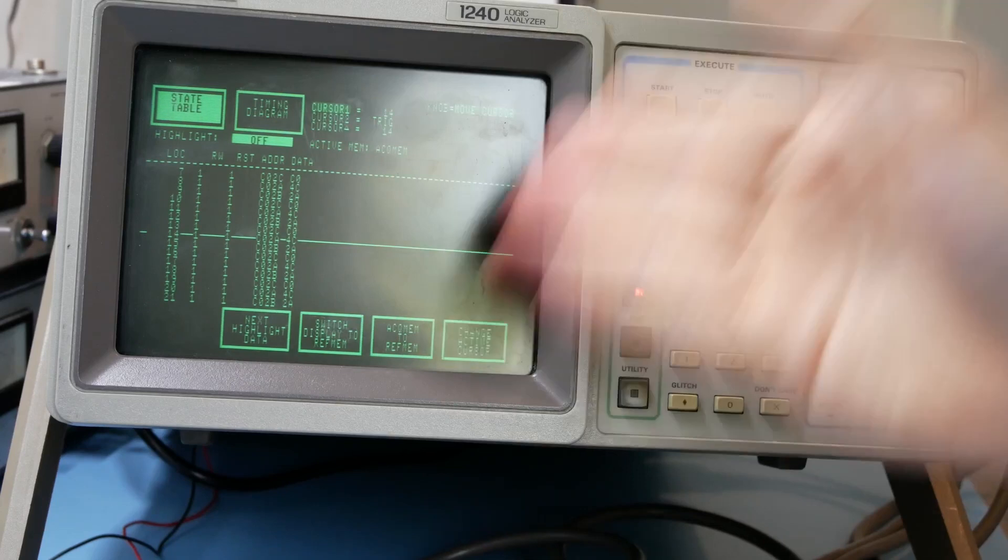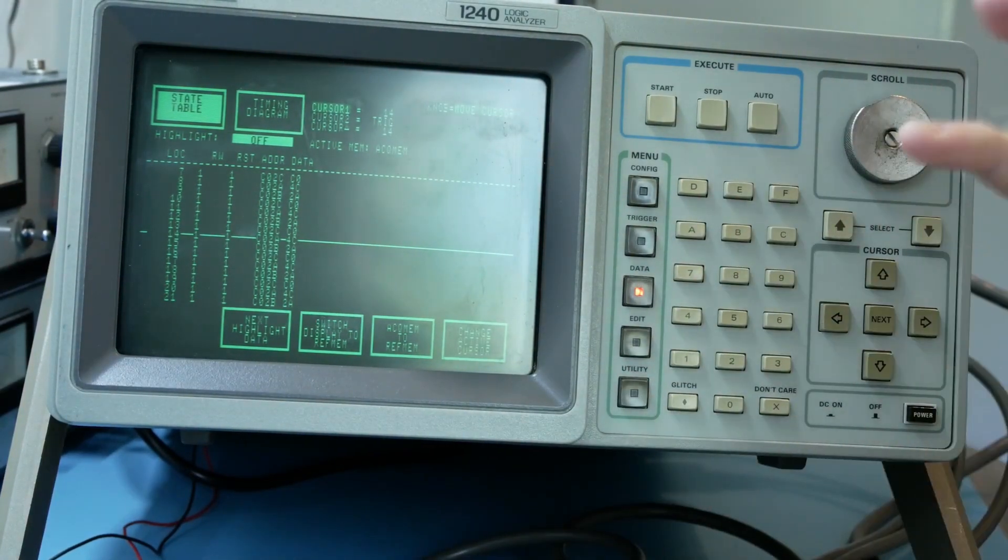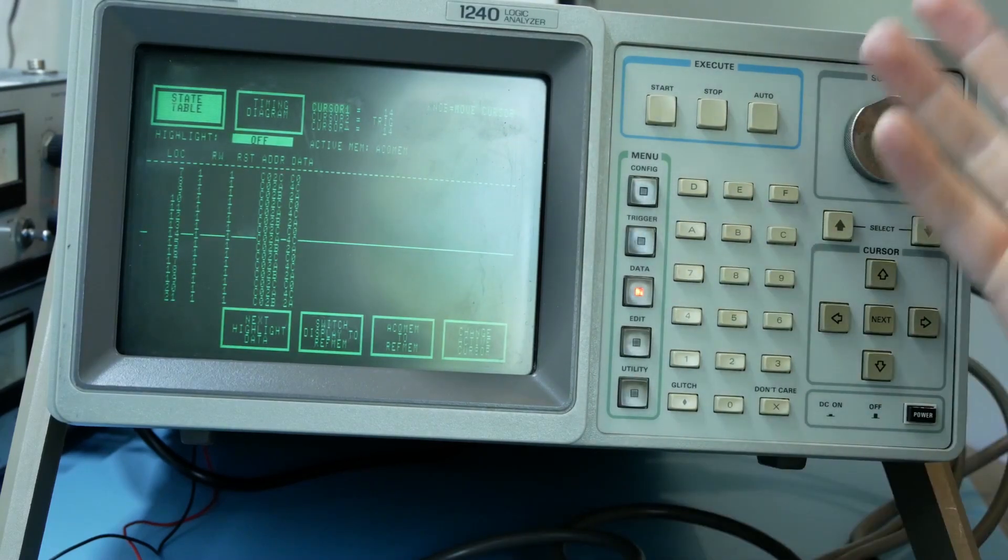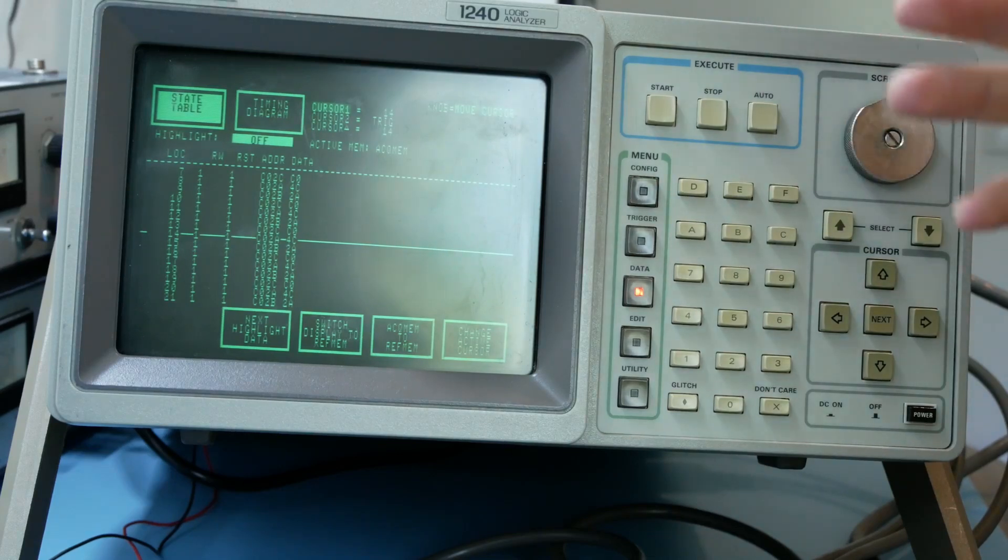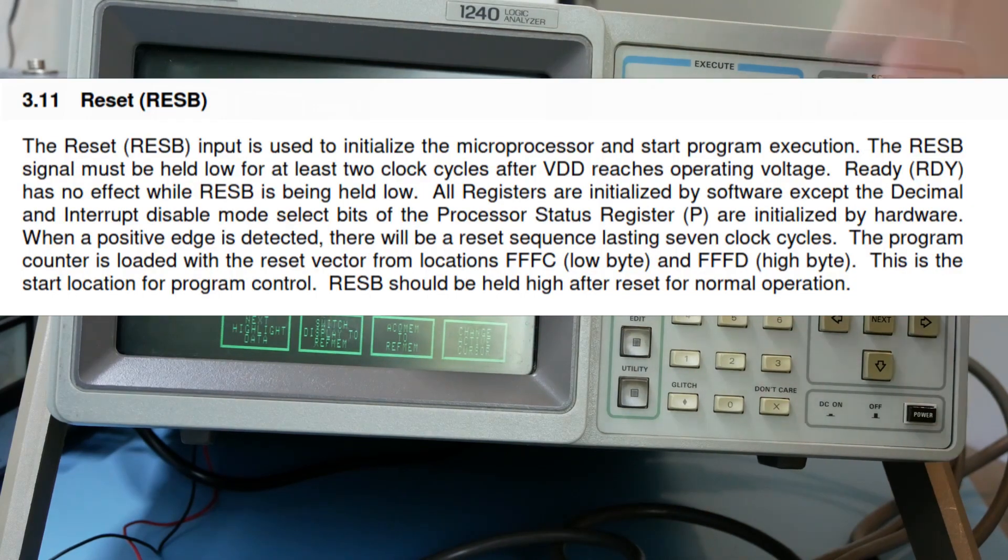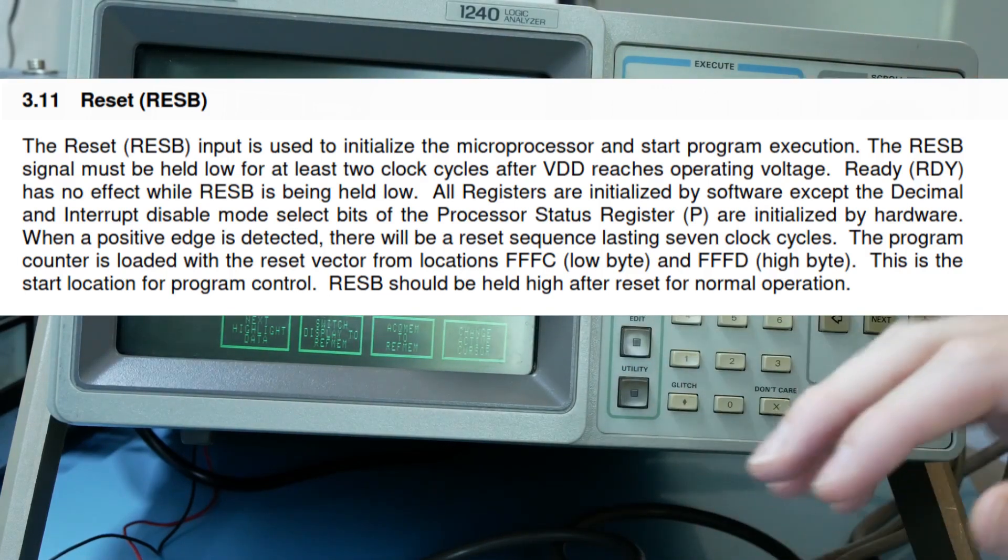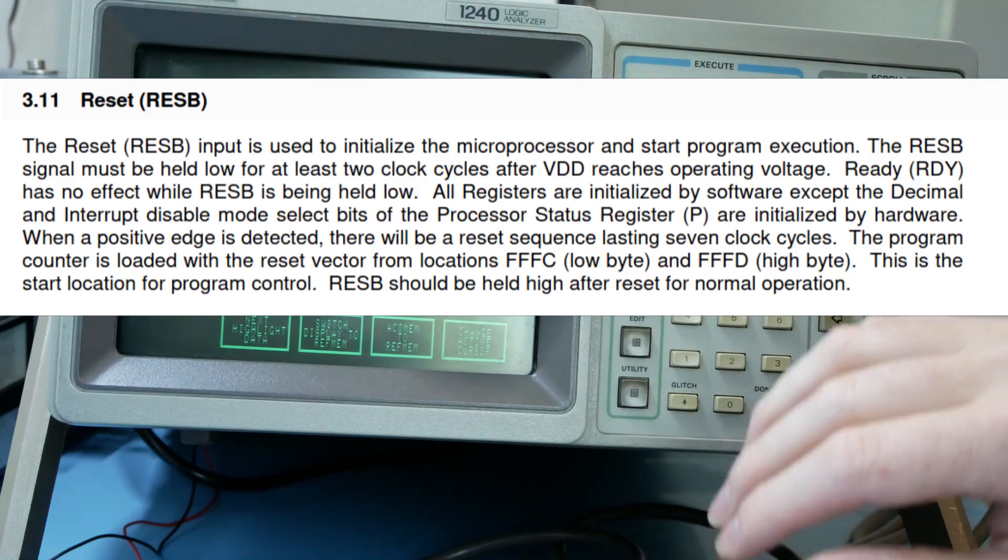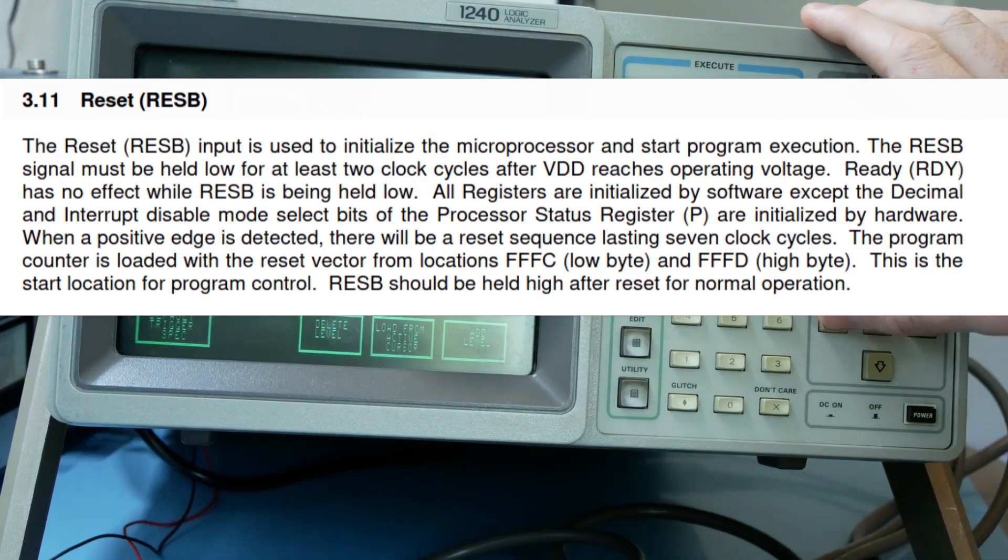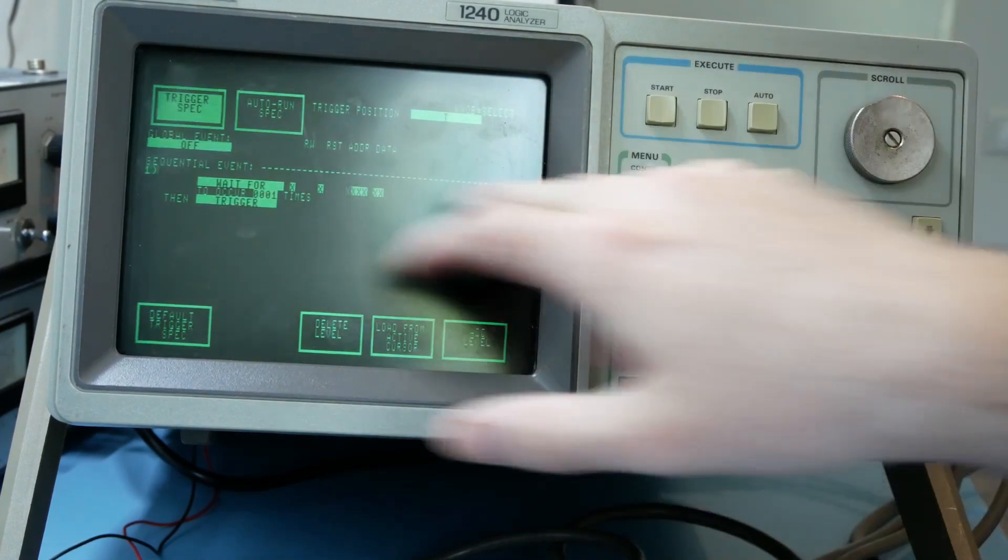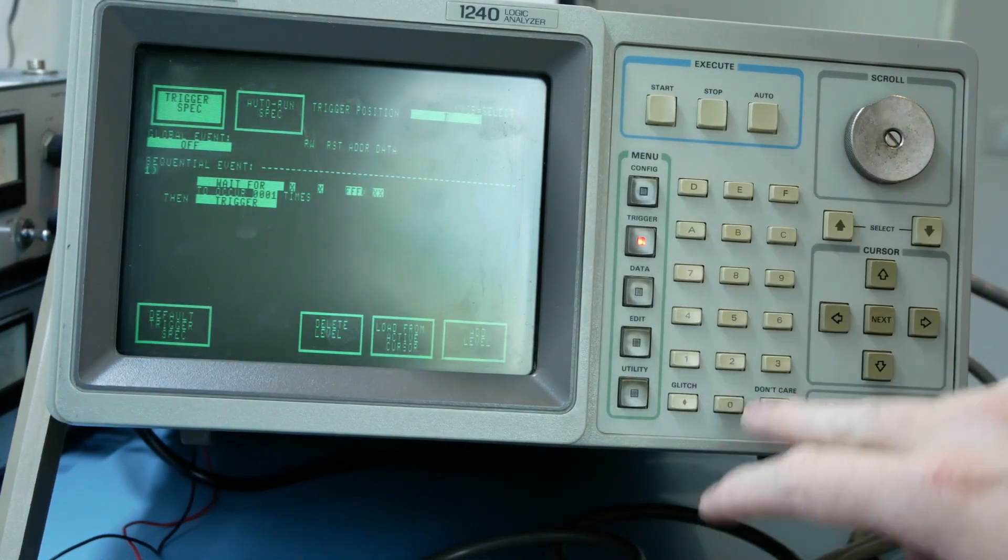Just capturing data on a running system is kind of cool but not super useful. So let's trigger on an event. The reset event of the 6502 is fun to look at. If you take a look at the datasheet at the reset section it lists that on a reset edge there is a reset sequence that takes a few cycles and then the program counter is loaded from memory in location FFFC and FFFD which is then the start of the program. So let's trigger on that.